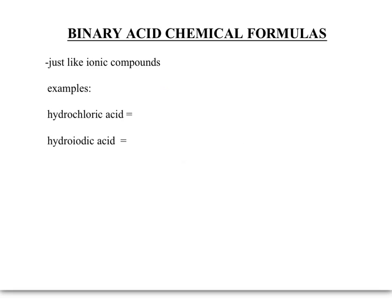When you see the prefix 'hydro,' think hydrogen — our acids are going to start with hydrogen. Hydrogen has a plus one charge. Then 'chloric' comes from chlorine, which has a negative one charge. When we crisscross those charges, we get HCl. We don't write the ones as subscripts — and you probably knew that hydrochloric acid was HCl anyway.